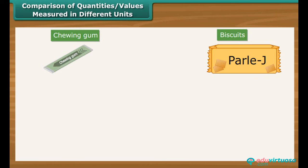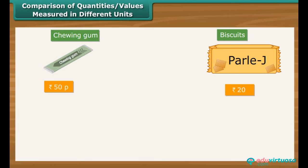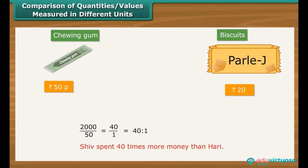Hari has bought a chewing gum for 50 paise. His friend Shiv has bought a packet of biscuits for Rs. 20. Who spent more money and by how many times? Before comparing, we express Rs. 20 as 2000 paise. Now we can work out the ratio: 2000 by 50 is 40 by 1, which is equal to 40 is to 1. Therefore, Shiv has spent 40 times more money than Hari.